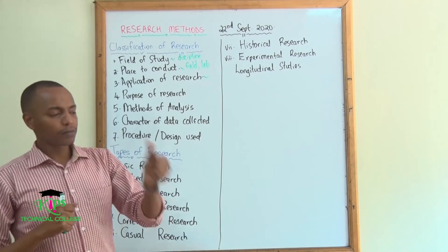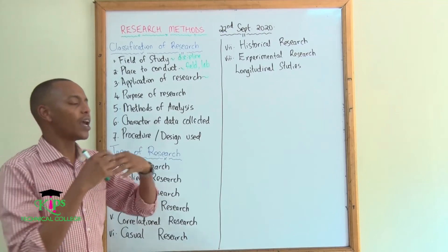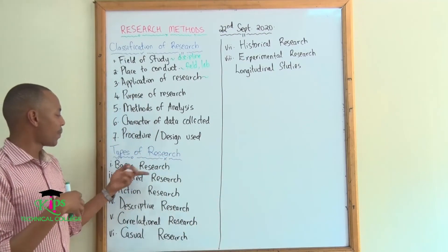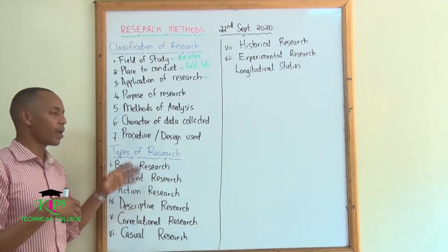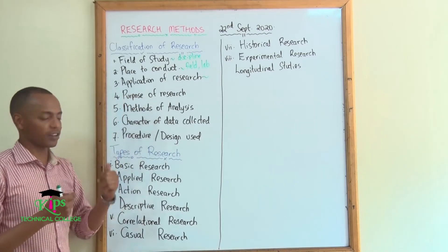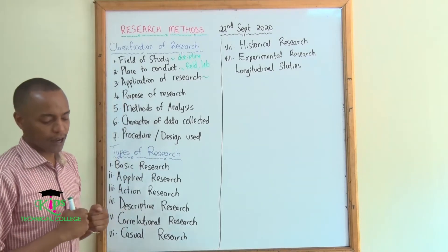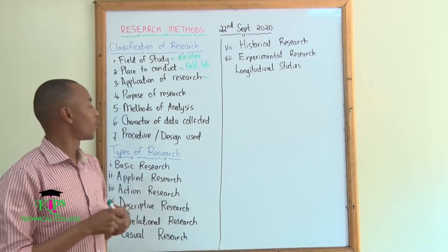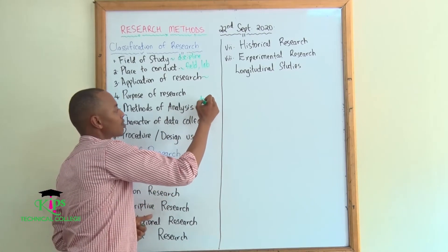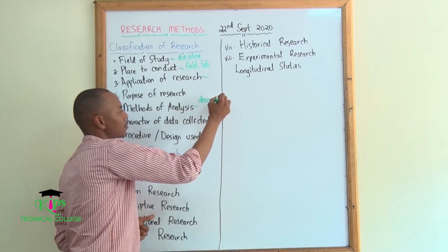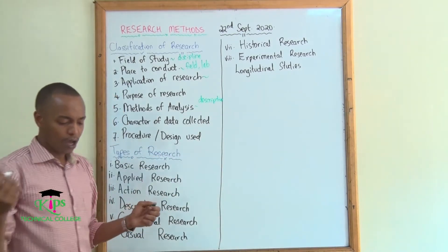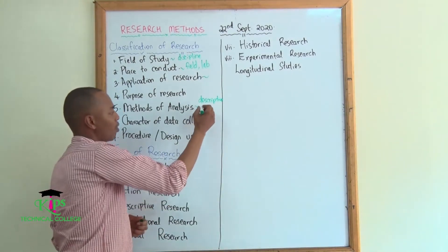Then consider the purpose of the research — what is the end result that you want to get out of it? Under basic research and applied action research, we will talk more about the purposes of research. Then the methods of analysis: do you want descriptive analysis, or do you want the normal empirical research?